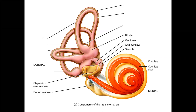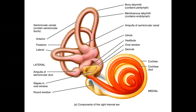We have the saccule and utricle, which will give us our static position in space, and our semicircular canals, which will give us our motion in space. Notice the semicircular canals are oriented based off of the three primary axes of geometry for our body, whereas the saccule and utricle are oriented in an x and y plane relative to a vertical axis and erect posture.